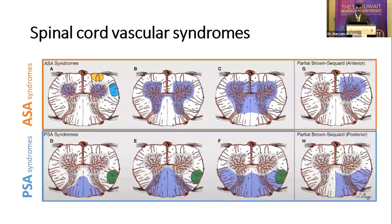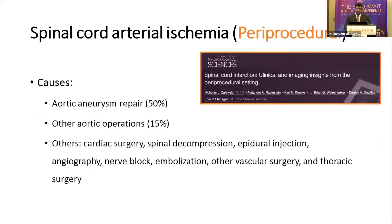Periprocedural spinal cord infarction is easier to diagnose because it is almost always associated with a procedure. Two-thirds involve aortic procedures; others include cardiac surgery, spinal decompression, epidural injection, angiography, nerve block, embolization, and other vascular and thoracic surgeries. If there is a surgery near the time of vascular myelopathy, think of periprocedural arterial ischemia.